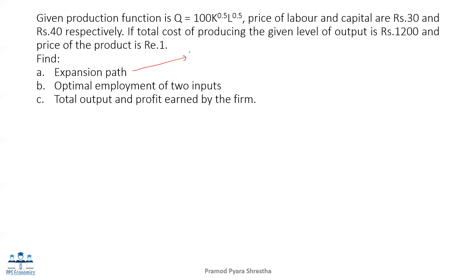For the expansion path equation, we use the equilibrium condition: MPL divided by MPK equals W divided by R. In this condition, we substitute the values of MPL and MPK, and then substitute into the expansion path condition for the optimal employment of two inputs.